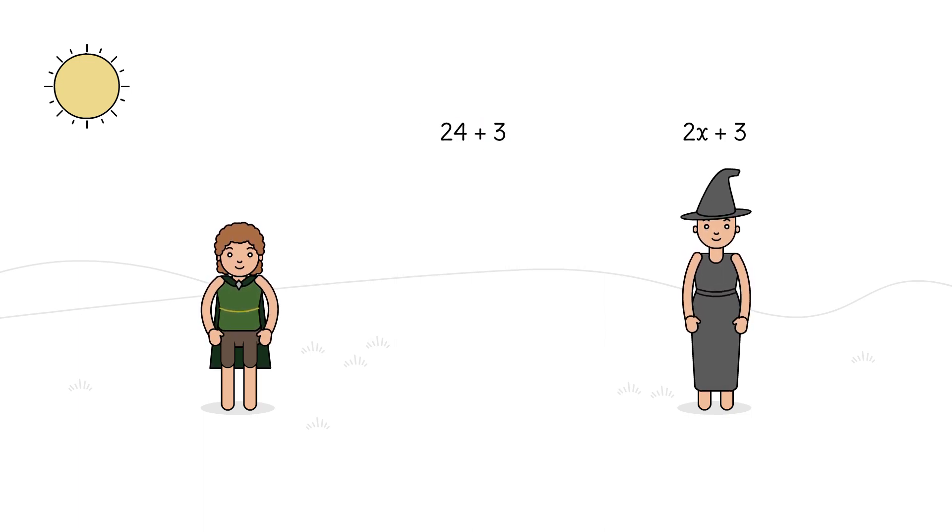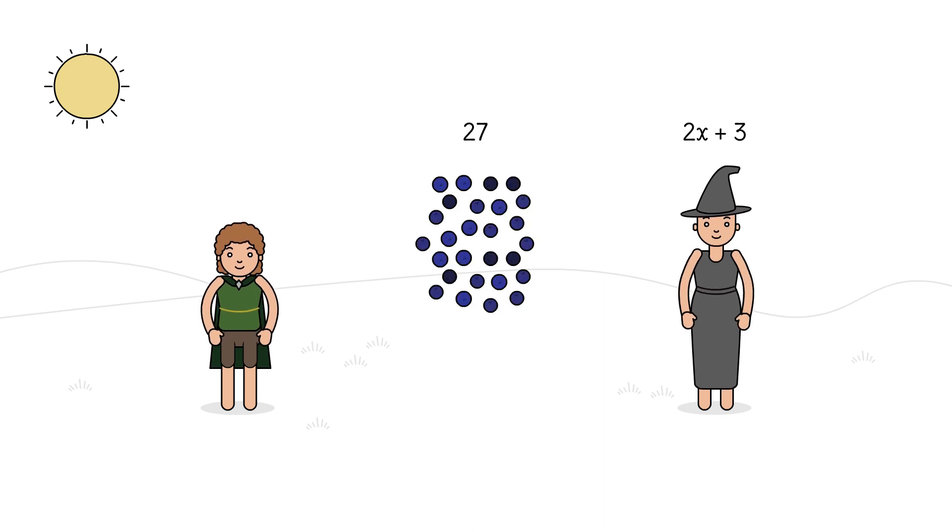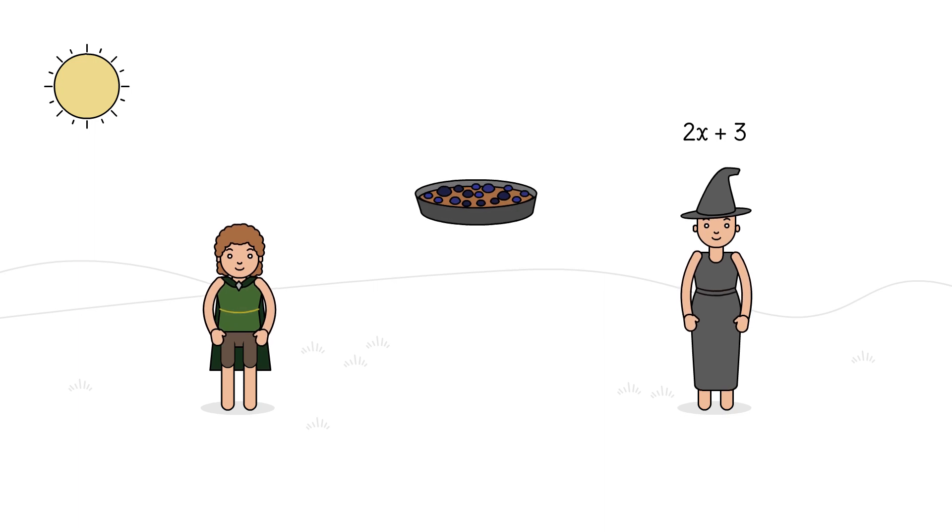And 24 plus 3 is 27, just like Devon was hoping. He has a delicious blueberry tart after dinner that evening.